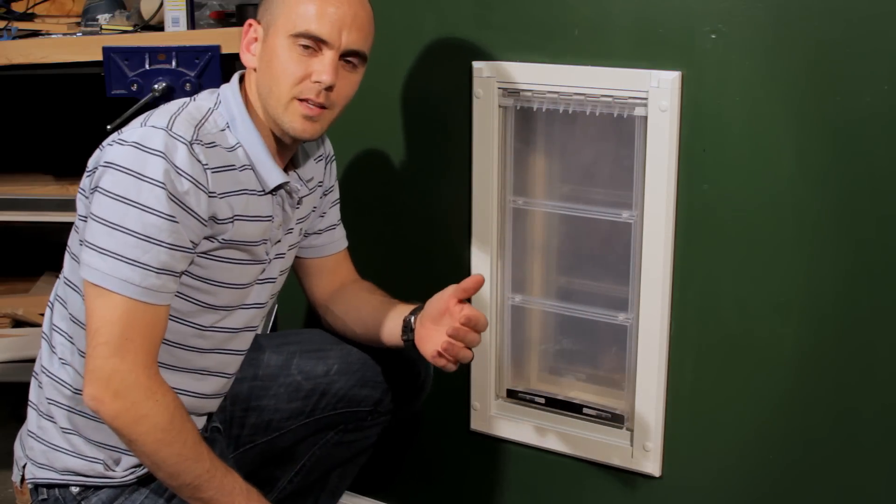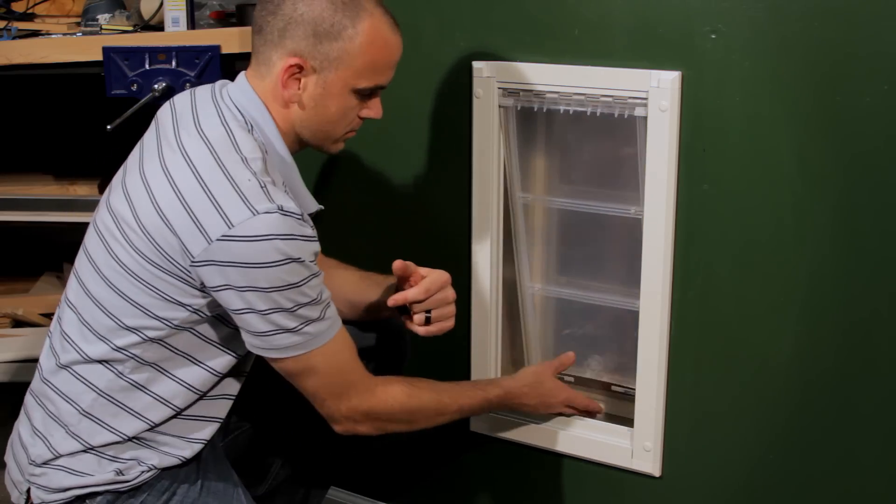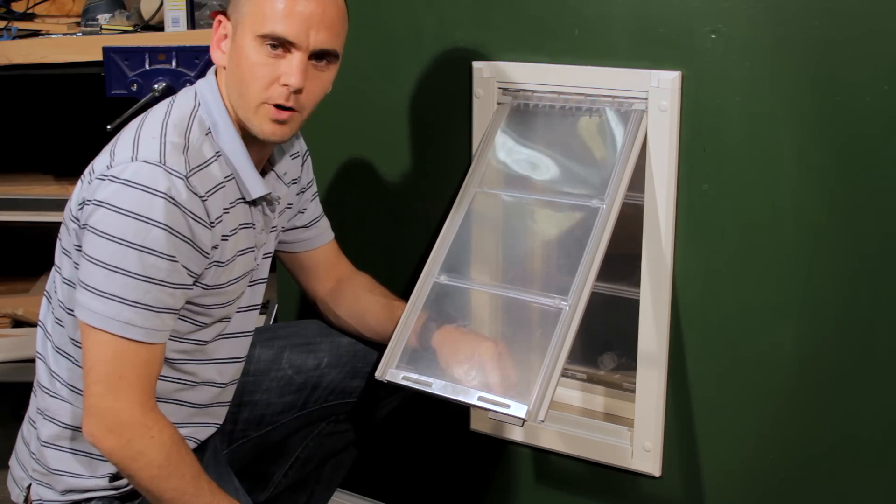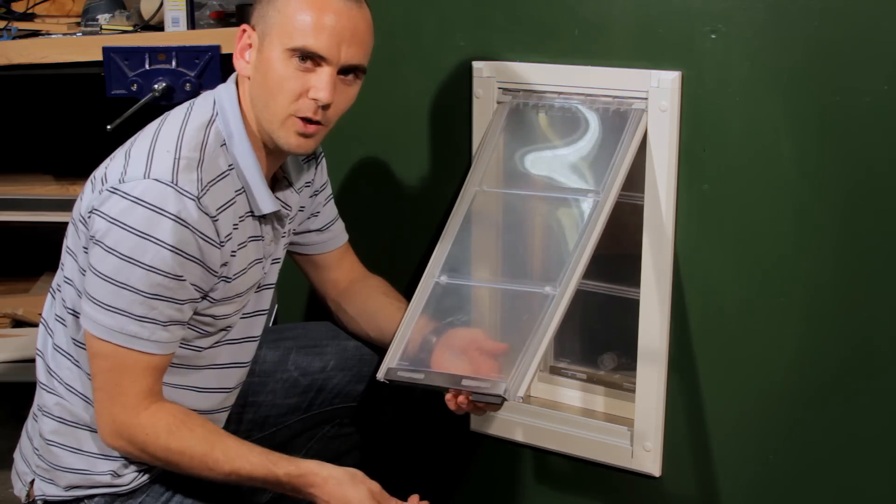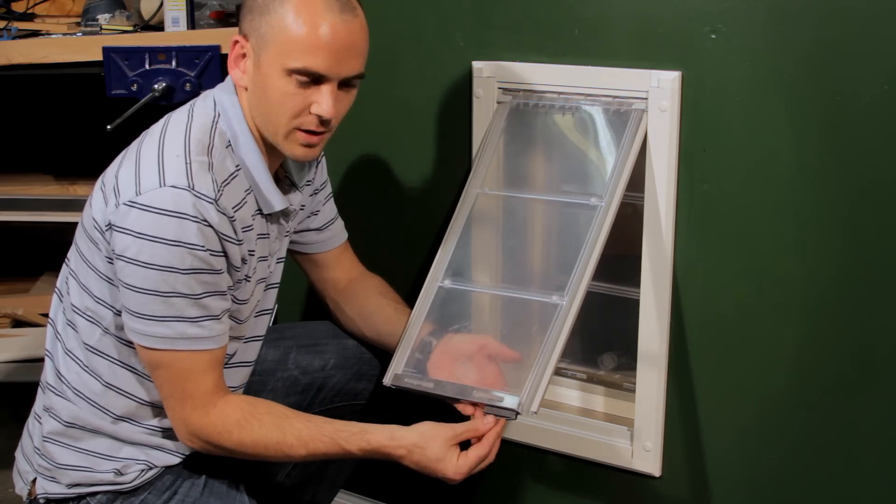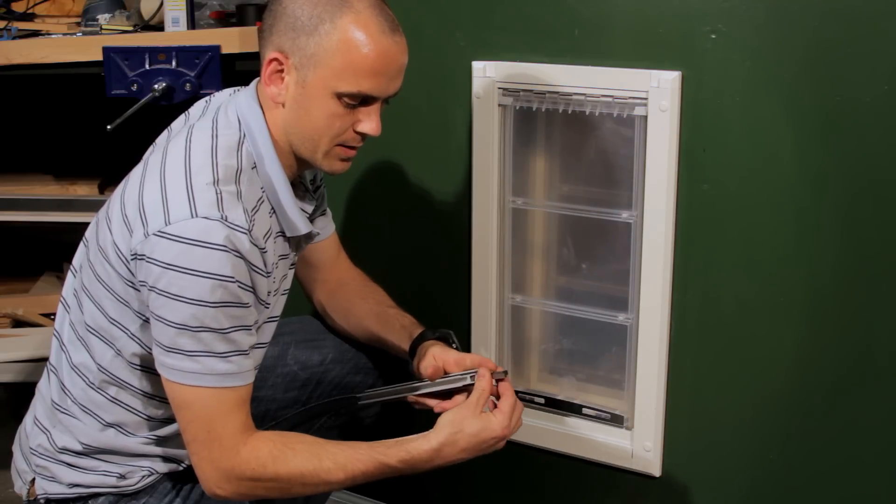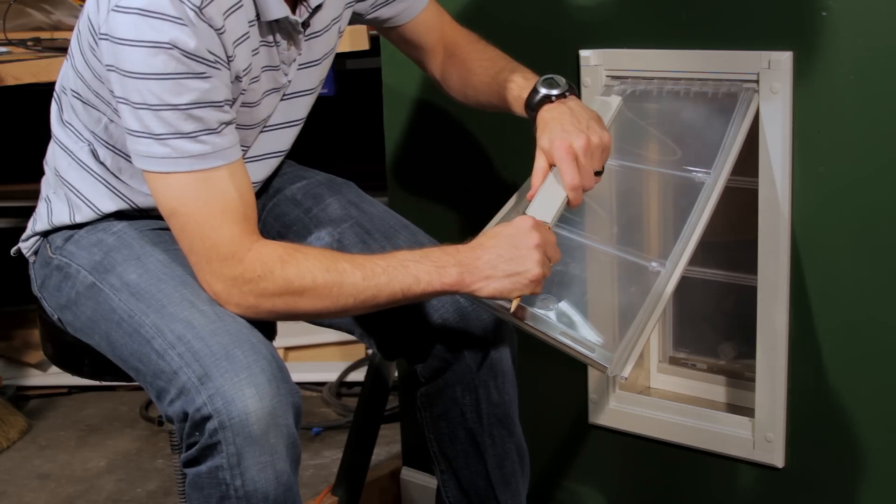Now instead of installing both magnets we're just going to install one. Again put one on one side, let it automatically orient, then put the clip on. Slide the magnet in and push it in a half inch.